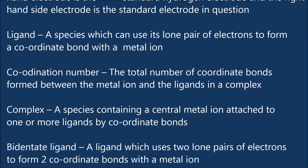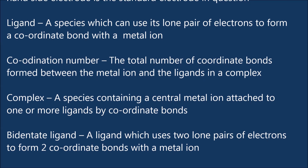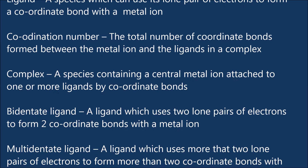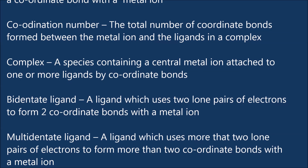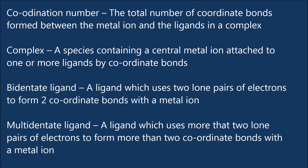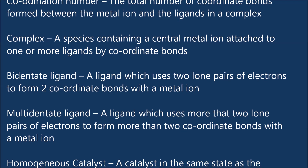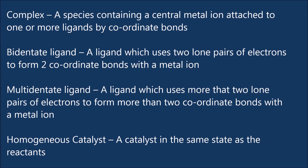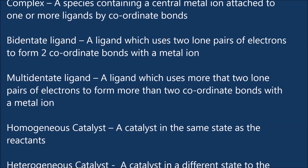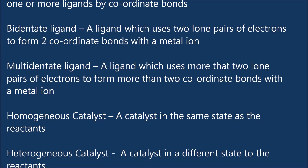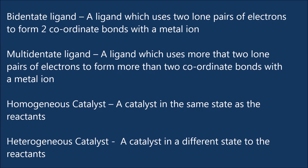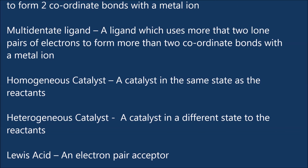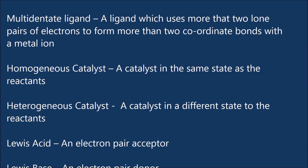Coordination number: the total number of coordinate bonds formed between the metal ion and the ligands in a complex. Complex: a species containing a central metal ion attached to one or more ligands by coordinate bonds. Bidentate ligand: a ligand which uses two lone pairs of electrons to form two coordinate bonds with a metal ion. Multidentate ligand: a ligand which uses more than two lone pairs of electrons to form more than two coordinate bonds with a metal ion.